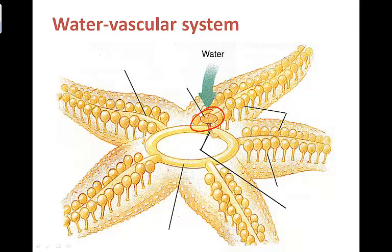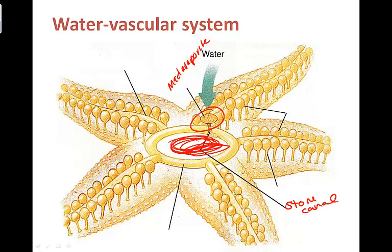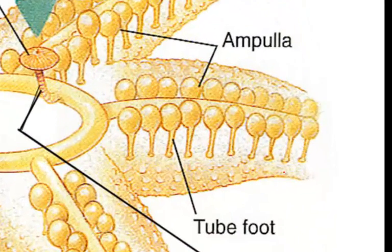The water vascular system is a system of fluid-filled closed tubes that work together to enable echinoderms to move and get food. The madreporite is a strainer-like opening that allows water to enter the water vascular system. After entering through the madreporite, water moves through the stone canal, then into the ring canal which rings around the stone canal, and eventually into the tube feet via the radial canals. Tube feet are small muscular fluid-filled tubes that end in suction cup-like structures.